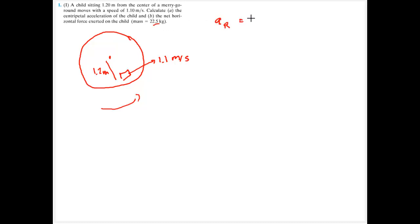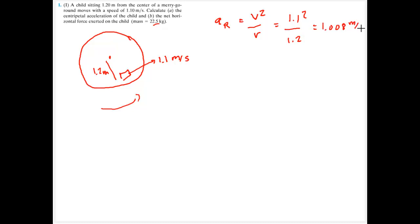The centripetal acceleration is going to be equal to the linear velocity squared divided by the radius, or 1.1 squared divided by 1.2. So we get 1.008 meters per second squared. That's the acceleration.